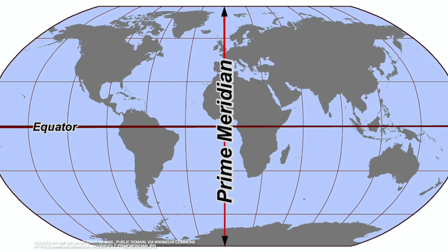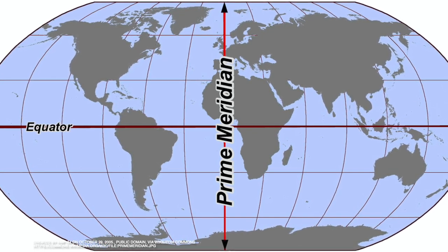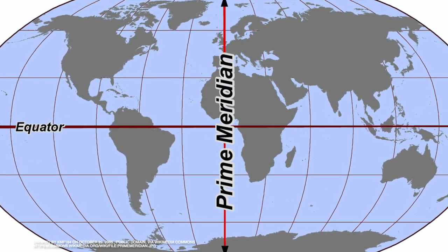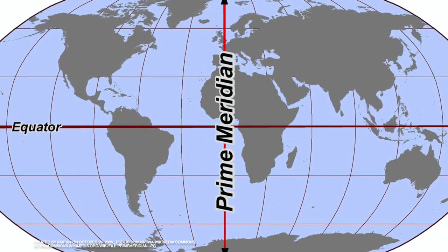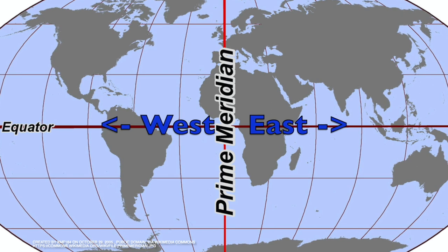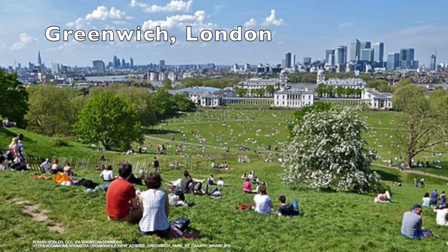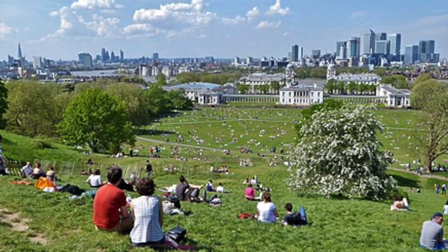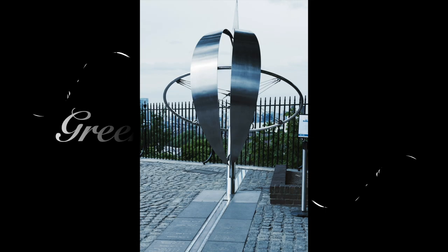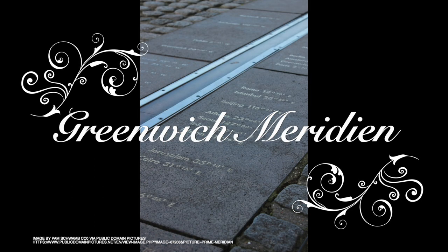Have you ever studied about the Prime Meridian? This is a famous imaginary vertical line which connects the North and South Poles. This is the zero-degree starting line to measure our world East and West. This line is in a place called Greenwich in London, and hence this line is called the Greenwich Meridian Line. People used to take pictures by standing on this zero-degree line.